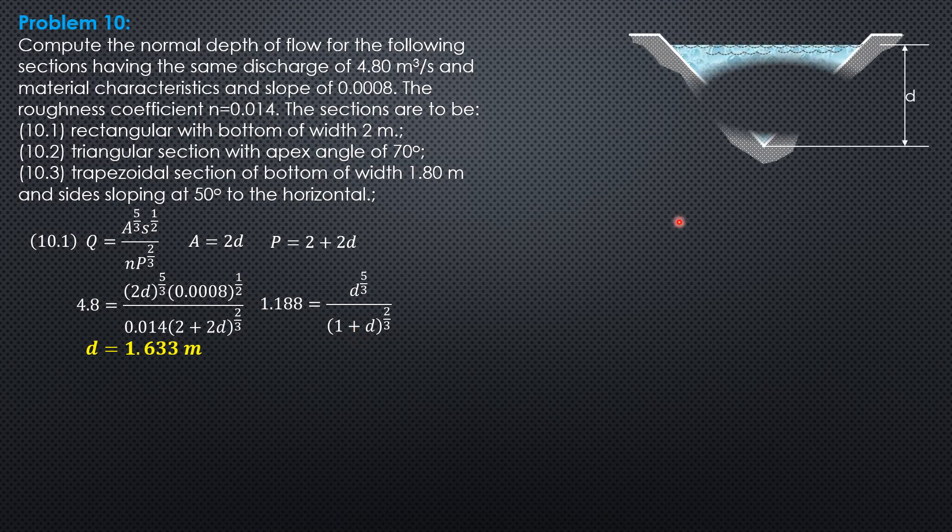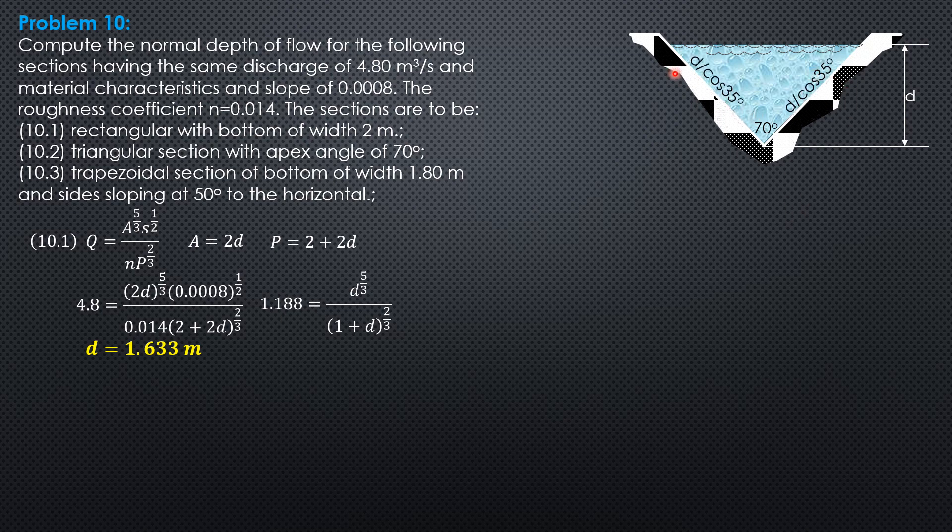Then, triangular section with apex angle 70 degrees. This slanted side, this is 35 degrees. Cosine 35 equals D over this slanted side, so this is D over cosine 35 each. The area is 1 half product of adjacent sides, D over cosine 35 degrees quantity square, sine of 70.